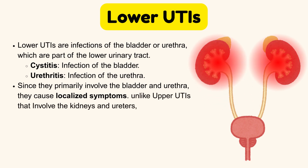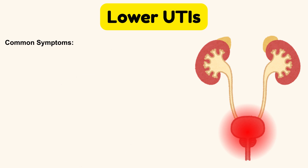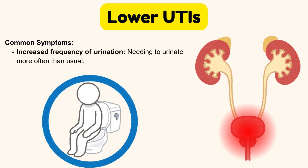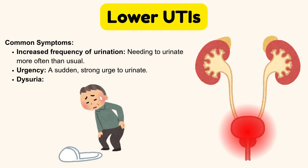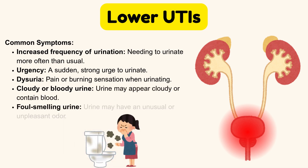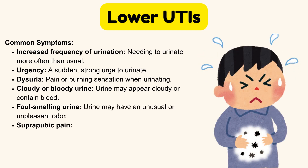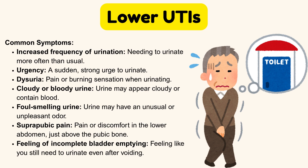Unlike upper UTIs that involve the kidneys and ureters and can cause generalized symptoms like fever, back pain, and nausea or vomiting, lower UTIs have the following common symptoms: increased frequency of urination (needing to urinate more often than usual), urgency (a sudden, strong urge to urinate), dysuria (pain or burning sensation when urinating), cloudy or bloody urine, foul-smelling urine, suprapubic pain (discomfort in the lower abdomen just above the pubic bone), and feeling of incomplete bladder emptying.